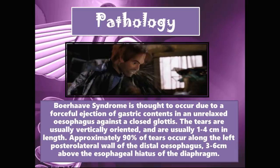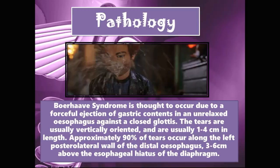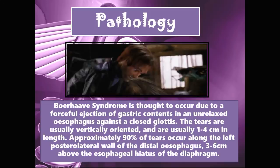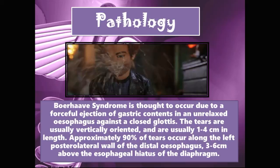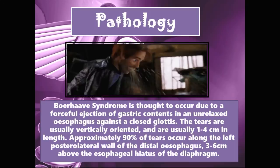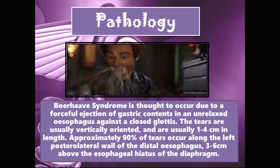Boerhaave syndrome is thought to occur due to a forceful ejection of gastric contents in an unrelaxed esophagus against a closed glottis. The tears are usually vertically oriented and are usually one to four centimeters in length. Approximately 90 percent of tears occur along the left posterior lateral wall of the distal esophagus, three to six centimeters above the esophageal hiatus of the diaphragm.